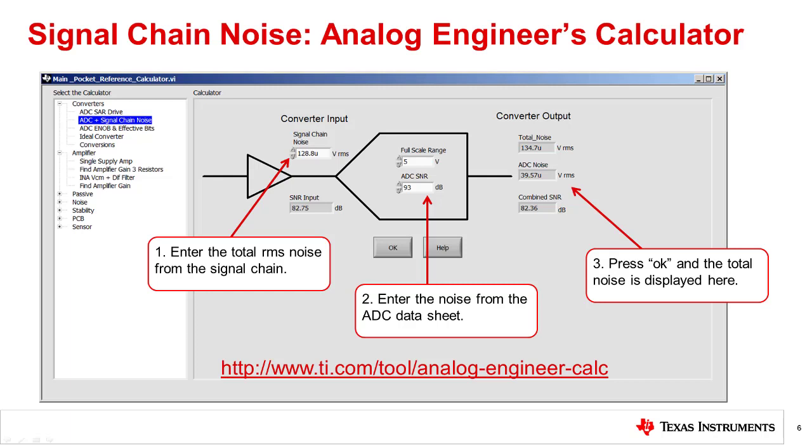The analog engineer's calculator introduced in other TI Precision Labs videos has a tool that will automatically do the calculation from the previous slide. First, enter the amplifier RMS noise. Second, enter the ADC datasheet information. And finally, press OK, and the results are displayed to the right. Notice that these numbers match the calculation in the previous slide. The URL where you can download this calculator is at the bottom of the page.